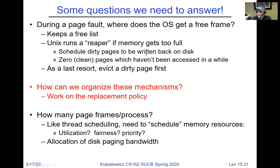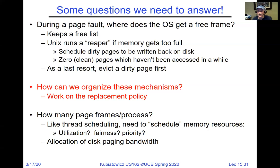Thrashing occurs when a process gets put to sleep to pull a page from disk, but the page gets evicted before the process gets to run again — processes are constantly going to disk and making no progress. This is clearly a situation where you have too many processes for the amount of available memory, or where the combined working sets of all processes exceed the physical DRAM.